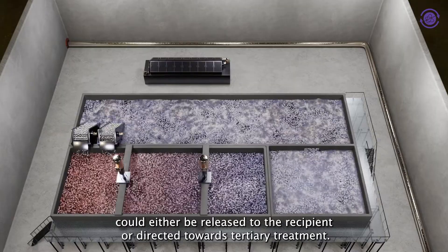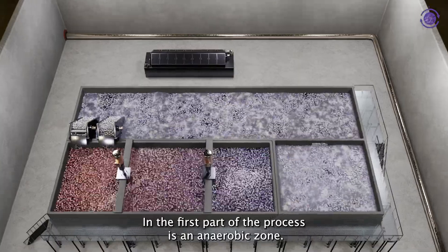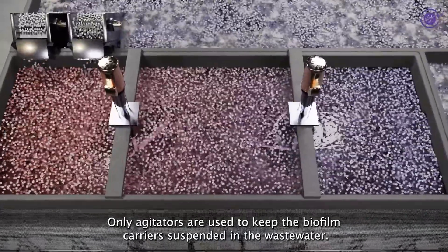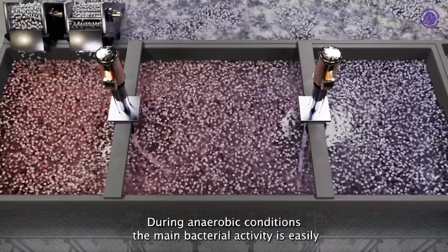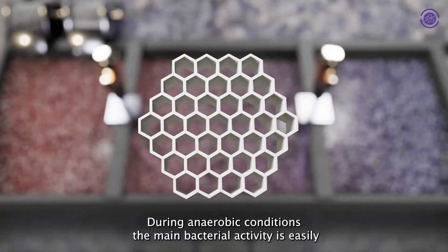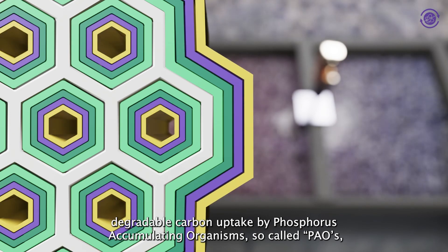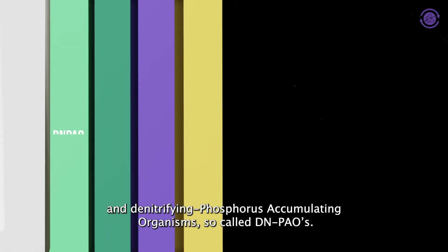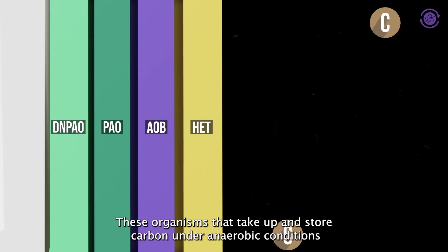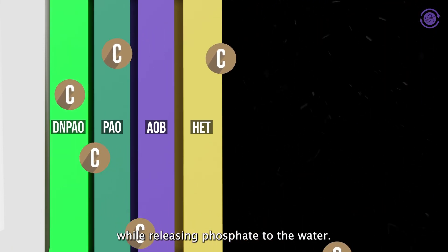In the first part of the process is an anaerobic zone. Only agitators are used to keep the biofilm carriers suspended in the wastewater. During anaerobic conditions, the main bacterial activity is easily degradable carbon uptake by phosphorus accumulating organisms, called PAOs, and denitrifying phosphorus accumulating organisms, called DNPAOs. These organisms that take up and store carbon under anaerobic conditions are releasing phosphate to the water.